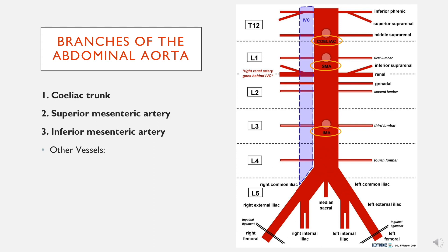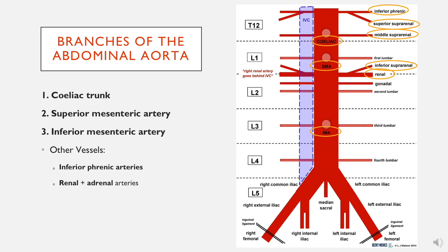There are some other branches to know about as well: the inferior phrenic artery, which supplies the diaphragm and is actually the first branch of the abdominal aorta; the renal and adrenal arteries, which as the name suggests supply the renal glands; the gonadal artery; and the lumbar arteries.